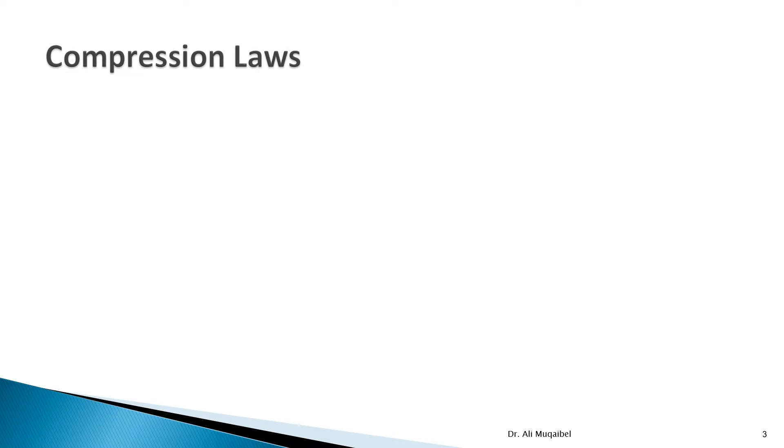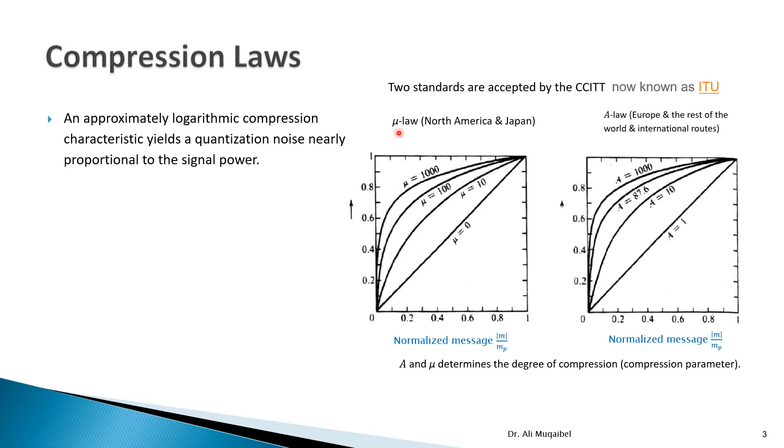Now we try to answer, how do we do this compression? Is it random? Or there must be some formula so that we can do that decompression. We're going to use approximately logarithmic compression to get what we want, to get the quantization noise proportional to the signal-to-noise ratio. That was our main objective. So the following diagrams, these are the standards that are accepted by the CCITT or now the International Telecommunication Union. This is the name of the agency that manages the communication standards for all countries. We have two standards. We have one standard for North America and Japan, another standard for Europe and the rest of the world, international routes.